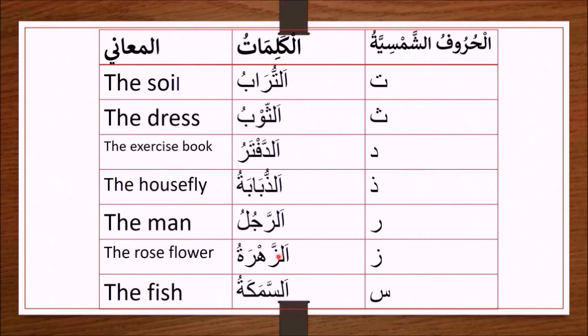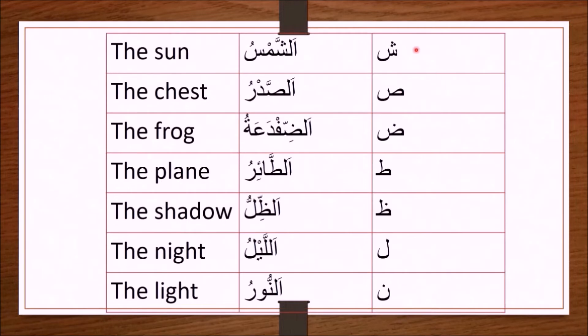Zain, a'sahrotu — the rose flower. Sin, a'samakatu — the fish. Shin, a'sshamsu — the sun.